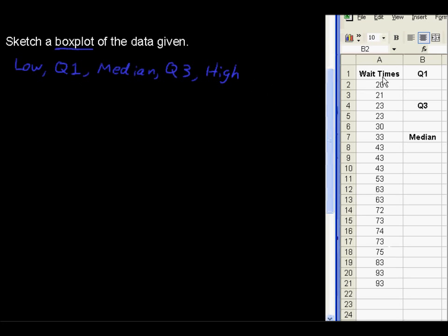Low and high are easy to pick off. In fact, this data is in order, so we've got 20 and 93 for the lowest and the highest, and we'll use Excel to find the first and third quartiles and the median.